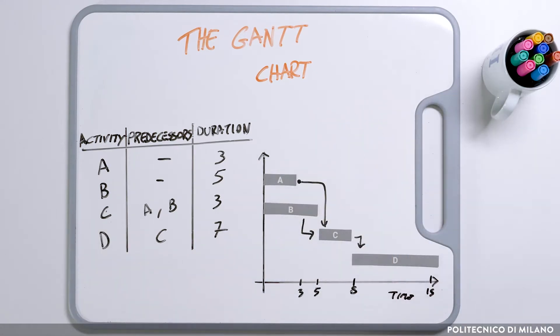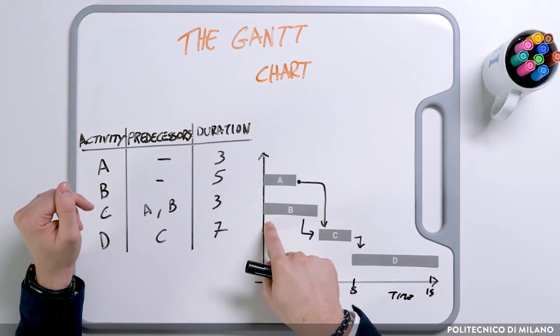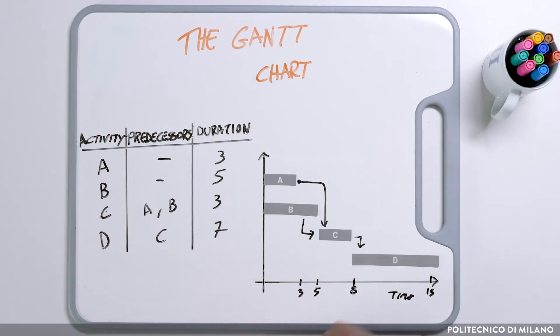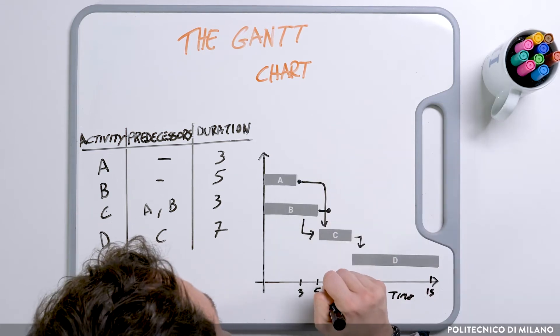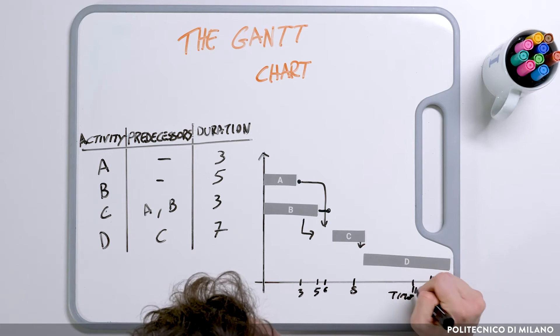In that case, normally we use a line. For example, activity A actually started at 0 and finished at 3, so we have a point representing that the activity is finished. If we take B, which also started at 0, we may realize it didn't finish at 5 but lasted one more period and finished at 6. Activity C had to start at 5 but started at 6, and had to finish at 8 but finished at 9 instead. Activity D started at 9 and now we are at time 11.